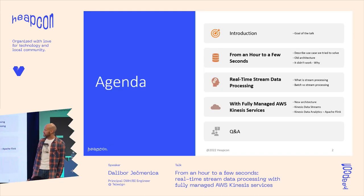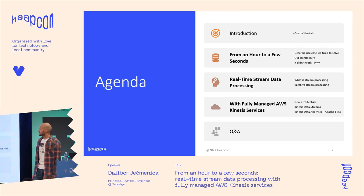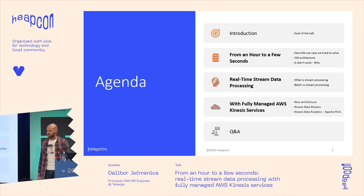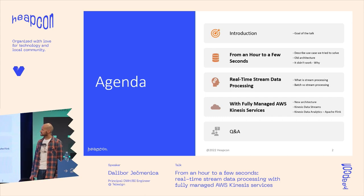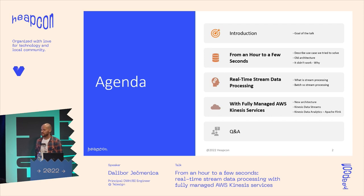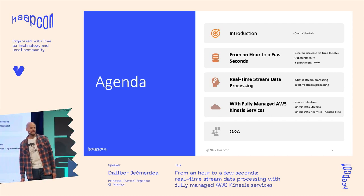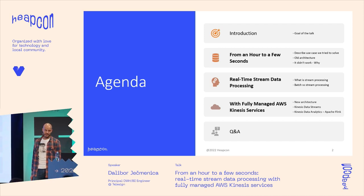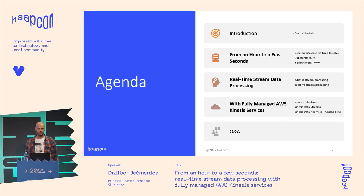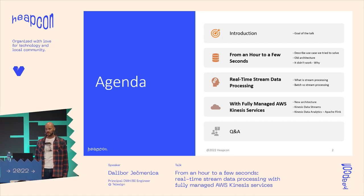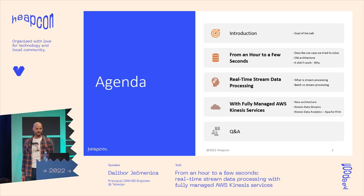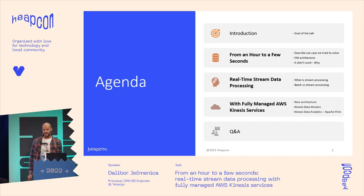Let's start with the agenda. In the introduction part I'll talk about the goal of this talk. After that there are three main sections derived from the full name of this talk. The first section is 'From an Hour to a Few Seconds,' covering the use case we were trying to solve. The second is real-time stream data processing — theory on stream processing and the difference between batch and stream. The third section is 'With Fully Managed AWS Kinesis Services,' covering our new architecture. I hope we'll have enough time for Q&A.